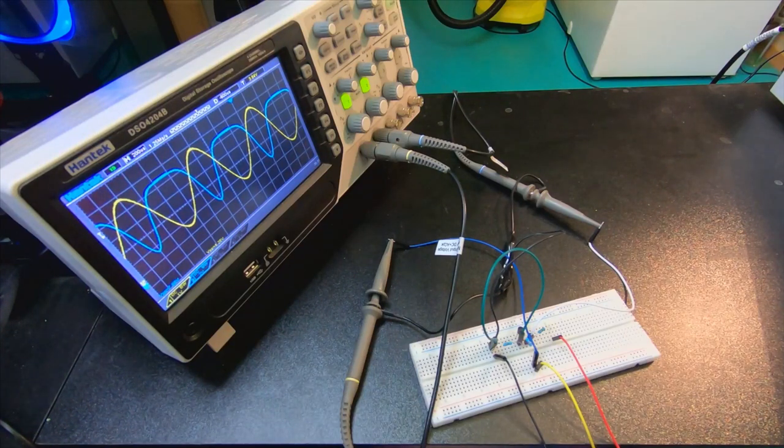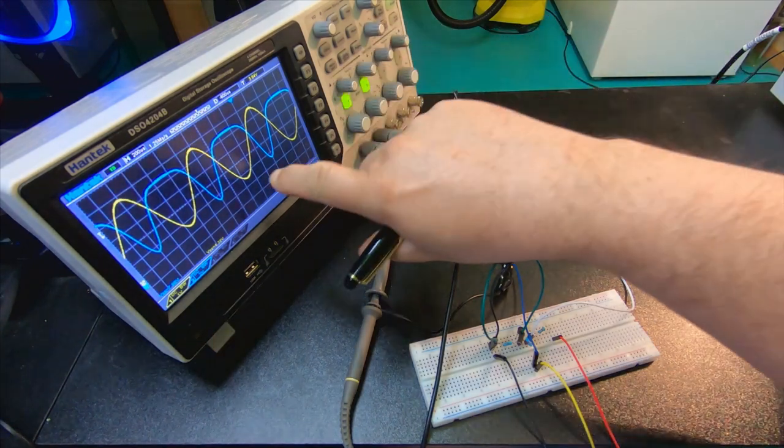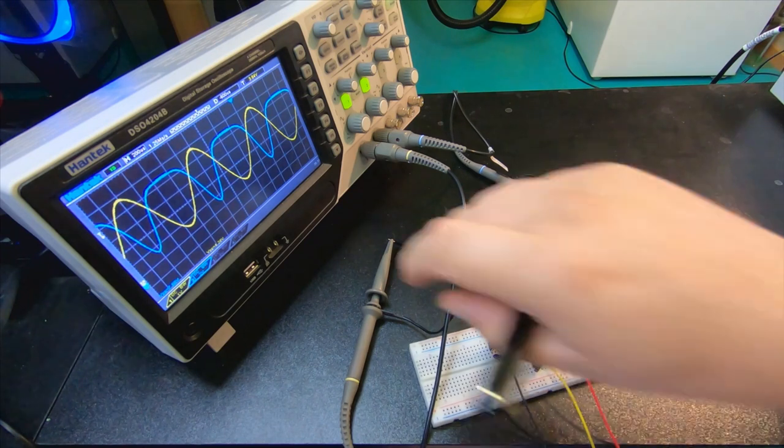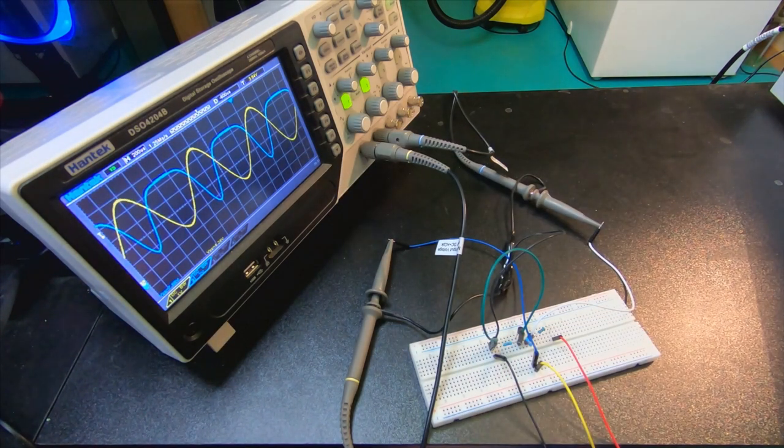So now we're back to the situation we were in one of the previous videos. As you see, this is the yellow one, it's the nice input signal, 1kHz, 4 volts, with a DC offset of 2.8 volts.